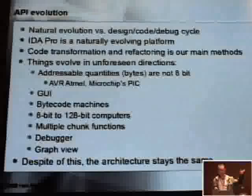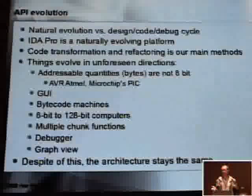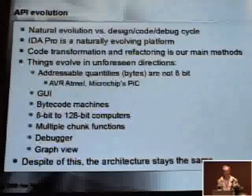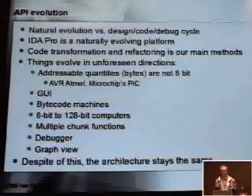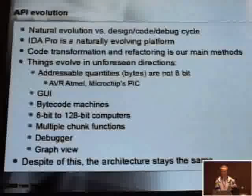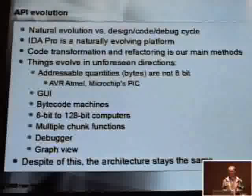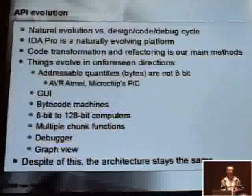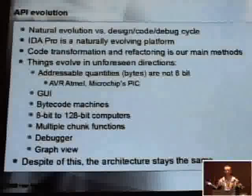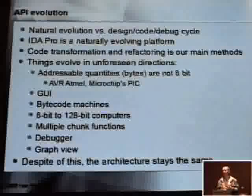I tried to come up with a list of unforeseen things we had to add to IDA. For example, a byte is always 8 bits — unfortunately not always the case. Some processors have addressable quantities that are not 8 bits. I did not foresee that a graphical interface would be a way to go, which is why IDA stayed with the text interface for long years. Then there were bytecode machines, 128-bit computers, and multiple-chunk functions.